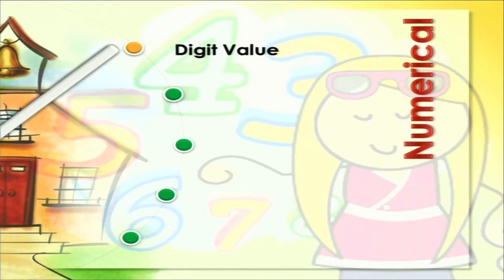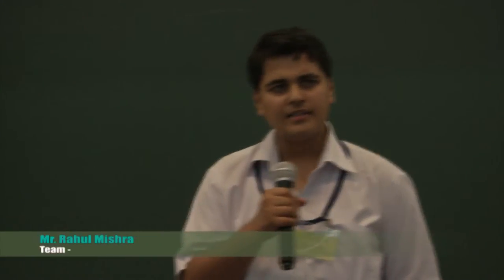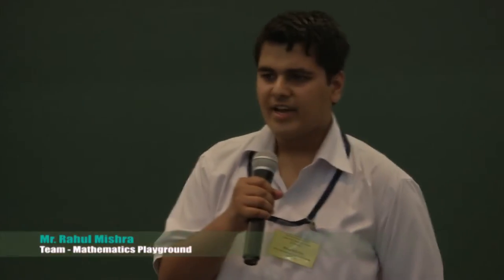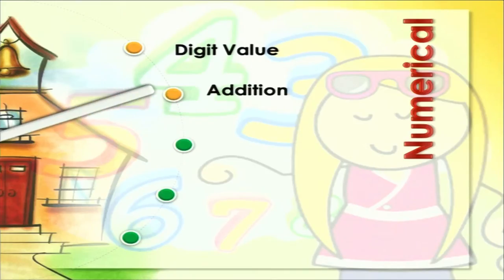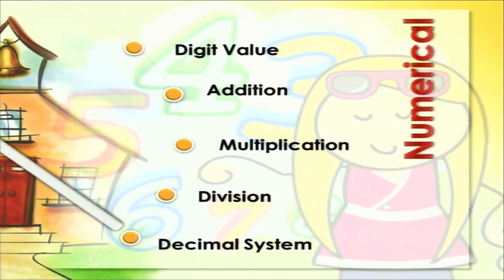As we all know, to make progress in any activity one requires a clear understanding of the foundations and basics. One cannot proceed with multiplication without learning how to count, and similarly one cannot learn multiplication without learning how to add. At the elementary level, visually appealing illustrations are essential because students do not have sufficiently developed minds to grasp concepts through text. We have divided our work into five modules: digit value, addition, multiplication, division and decimal system.